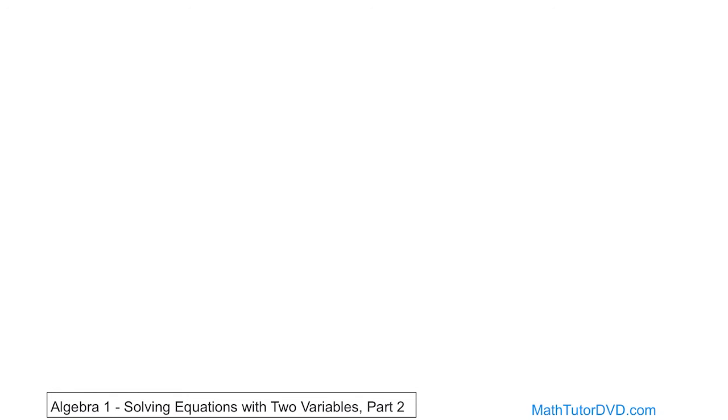Hello, welcome back to Algebra 1. We're going to continue learning about these equations that have two variables. So here's a weird looking one: x² - 3y² = 15. It's an equation because we have an equal sign, and we have two variables. Yes, we have some exponents, but basically we have two variables, and the question is...